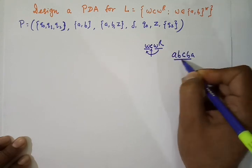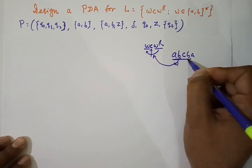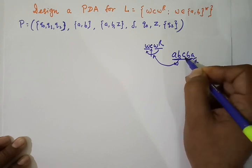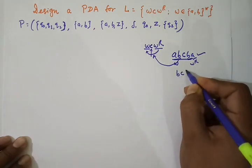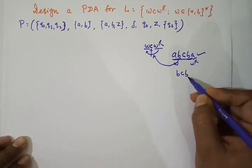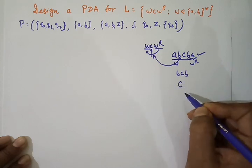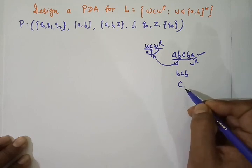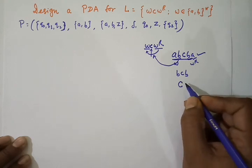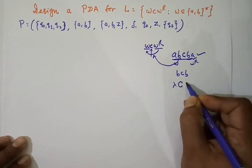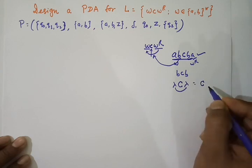The string A, B, C, B, A is in the form WCW^R — here AB is our W and BA is our W^R, with C in between. So this string is accepted. Similarly, B, C, B should also be accepted because B is the reverse of B. Importantly, the string consisting of only C should also be accepted, because before C there is null and after C there is null, and null is the reverse of null.